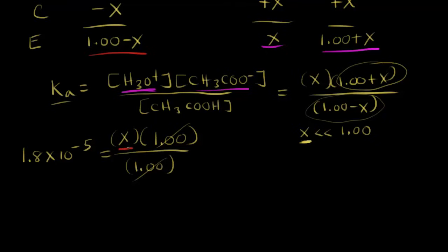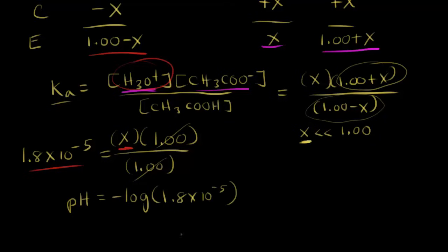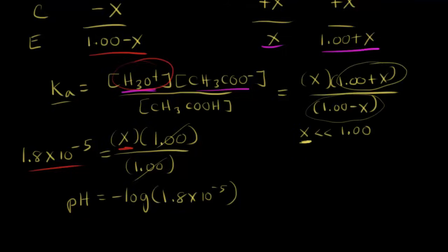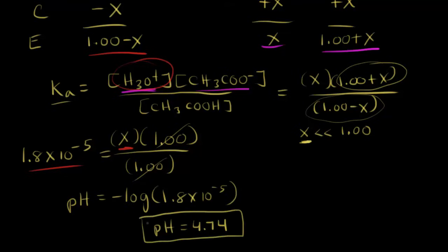The ones cancel each other out, and so the concentration of hydronium, which is x, is 1.8 times 10 to the negative five. To find the pH, all we have to do is take the negative log of that — negative log of 1.8 times 10 to the negative five. And so the pH is equal to 4.74.